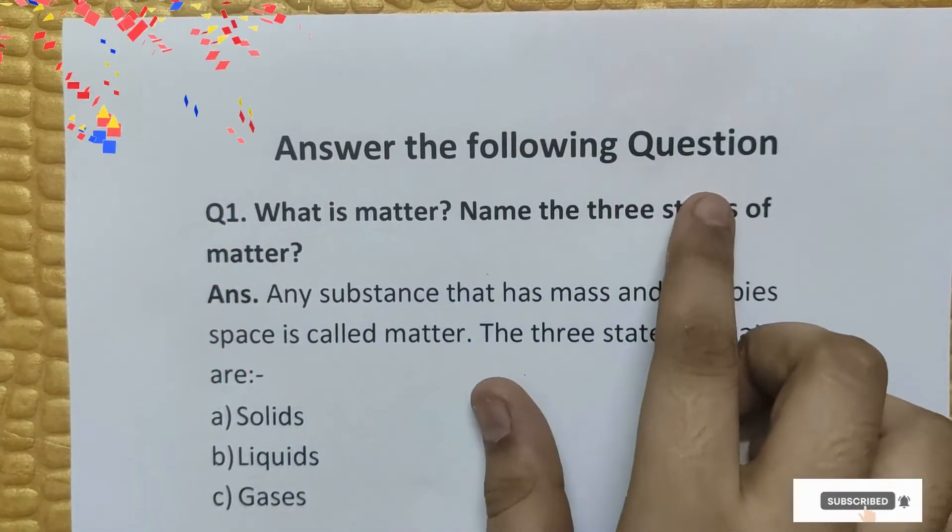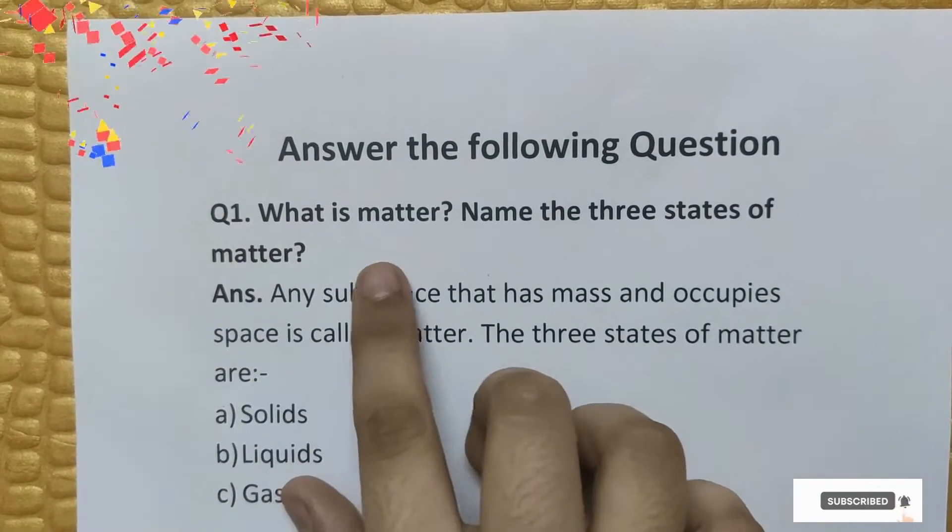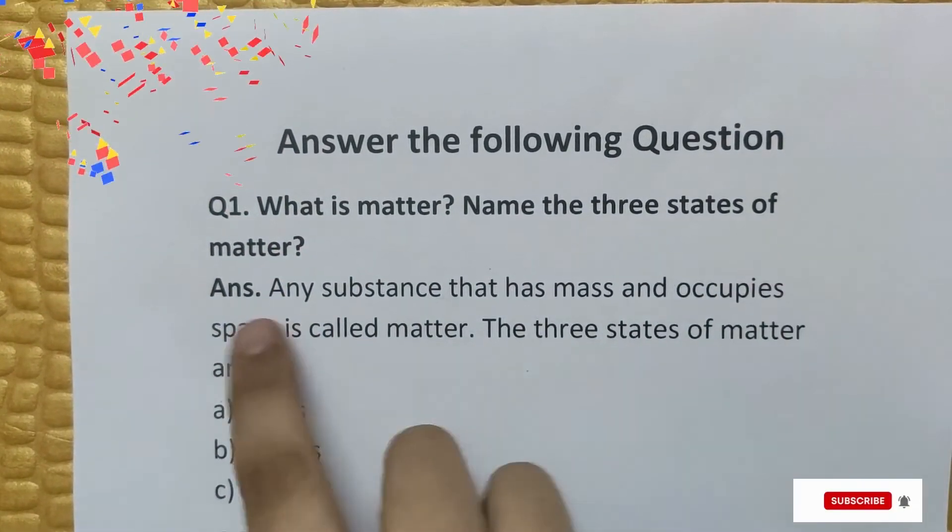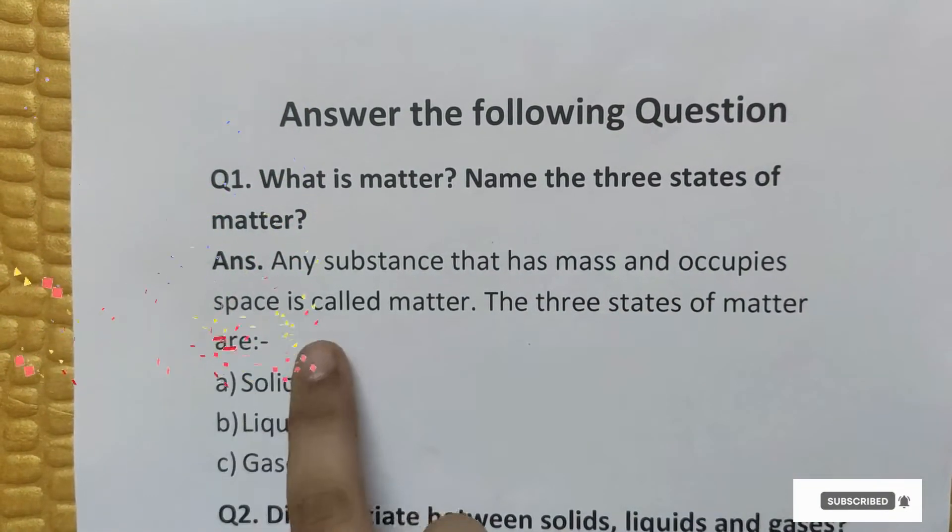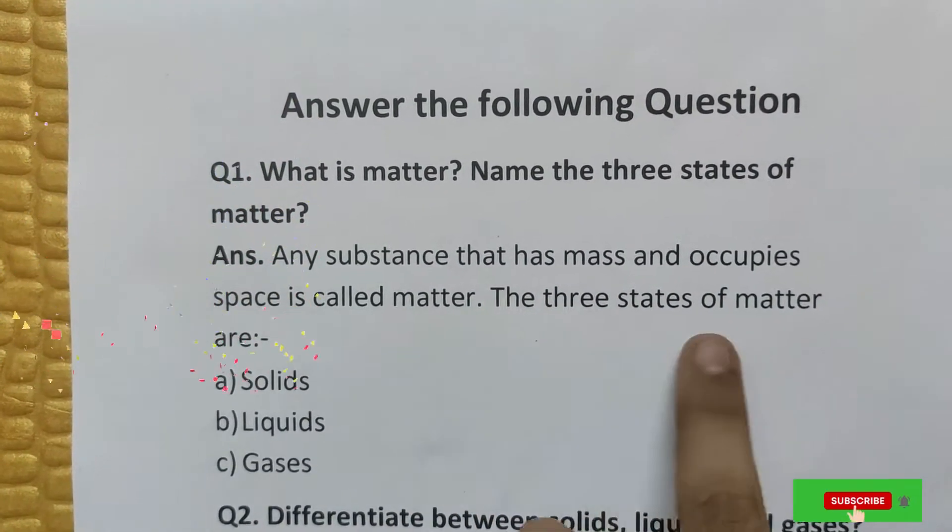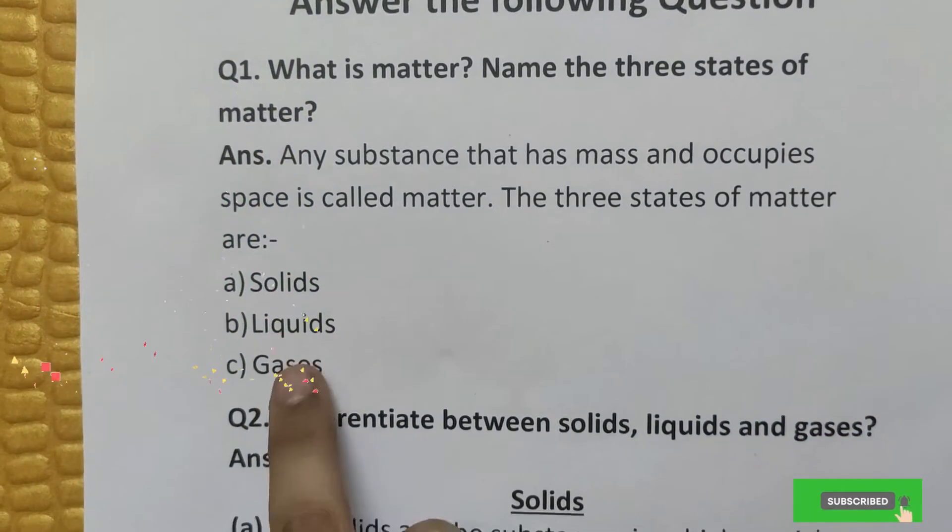Answer the following questions. Question number one: What is matter? Name the three states of matter. Answer: Any substance that has mass and occupies space is called matter. The three states of matter are solids, liquids, and gases.